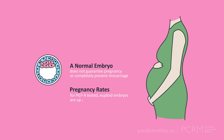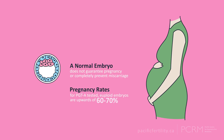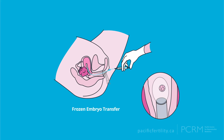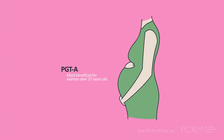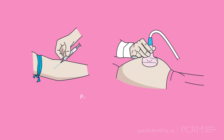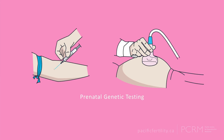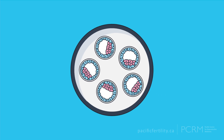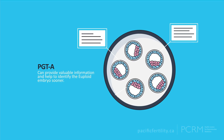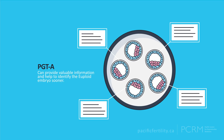Pregnancy rates for PGTA-tested euploid embryos are upwards of 60 to 70 percent. You will need to undergo a frozen embryo transfer cycle to transfer the normal embryo into the uterus. PGTA is most beneficial for women who are over 37 to 38 years old and have multiple embryos. Once pregnant, prenatal genetic screening is still recommended because, although very accurate, there is a chance PGTA can be incorrect. Even though PGTA does not create better quality embryos, it can provide valuable information and help identify the euploid embryo sooner.